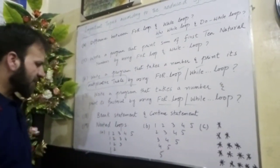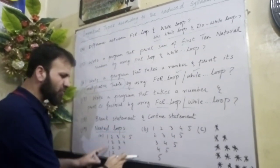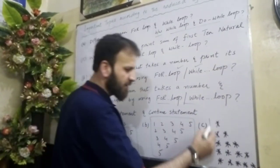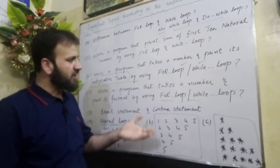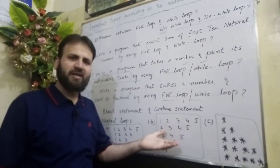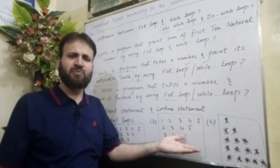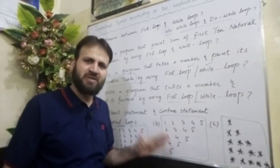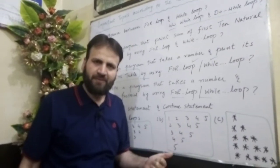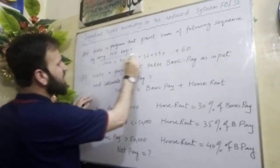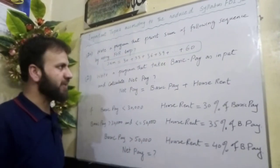Question nineteen: what are nested loops, and when using nested loops, write programs to print different patterns — Pattern A, Pattern B, and Pattern C — using nested loops. I have uploaded all these programs in my tutorial videos on my YouTube channel and explained them in detail. You can watch them as many times as needed. Question twenty: write a program that prints the sum of a given sequence using for loop or while loop.